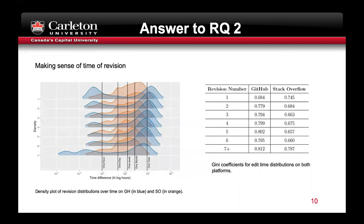This distribution graph shows the revision time distribution for both types of snippets. Computing the Gini index on these distributions shows that the Gini index for Stack Overflow snippets is more closer to one, hence they are more uniform.